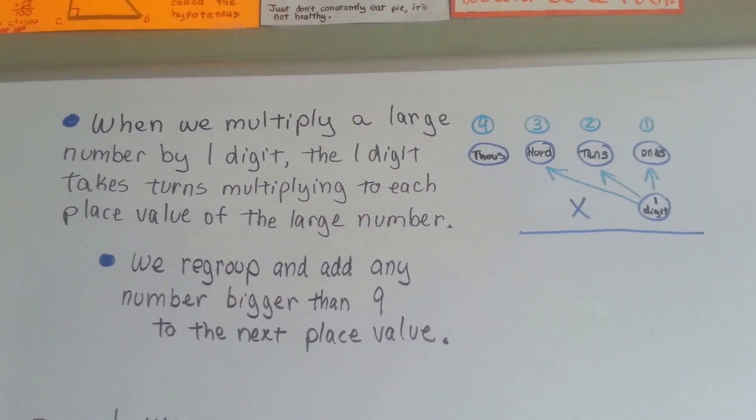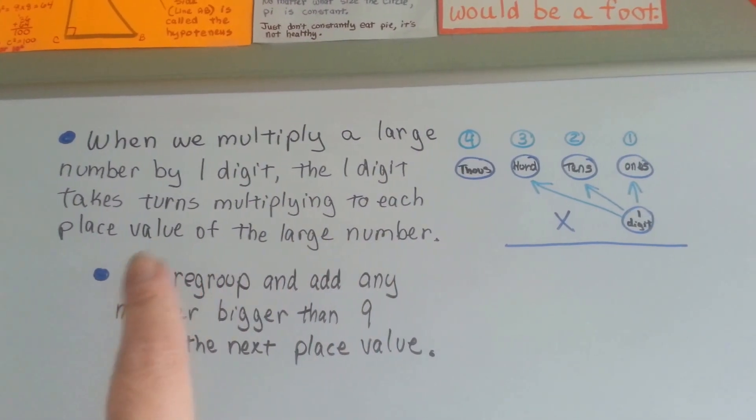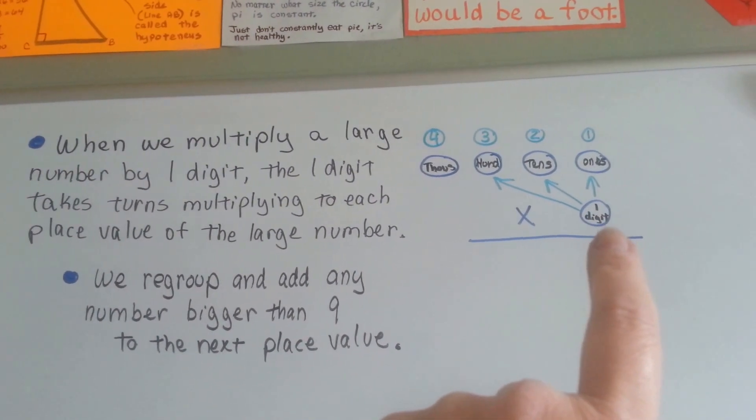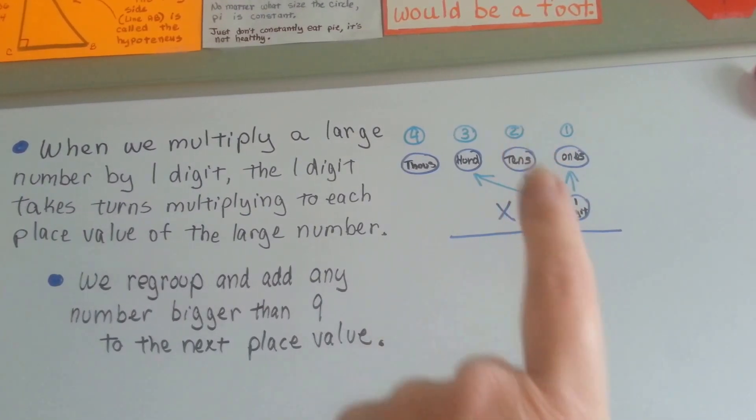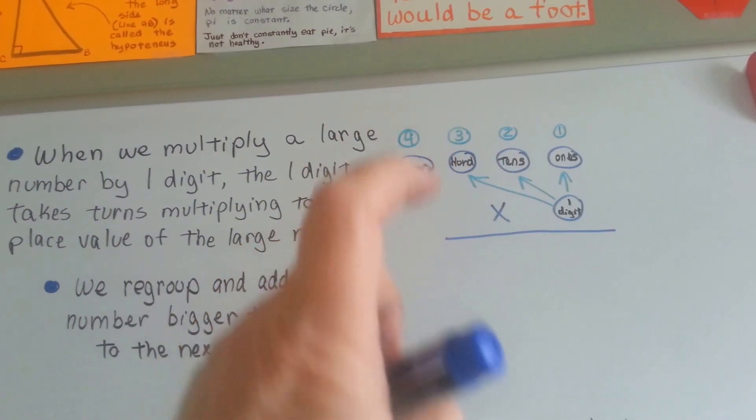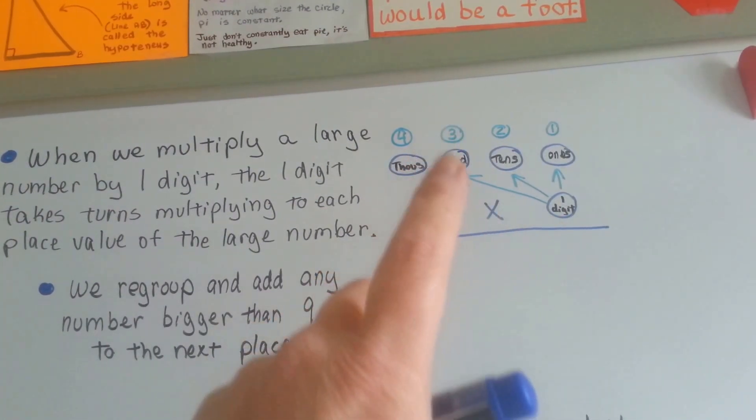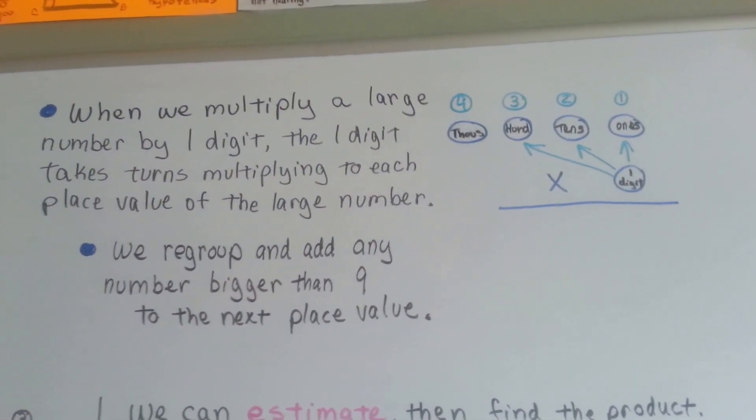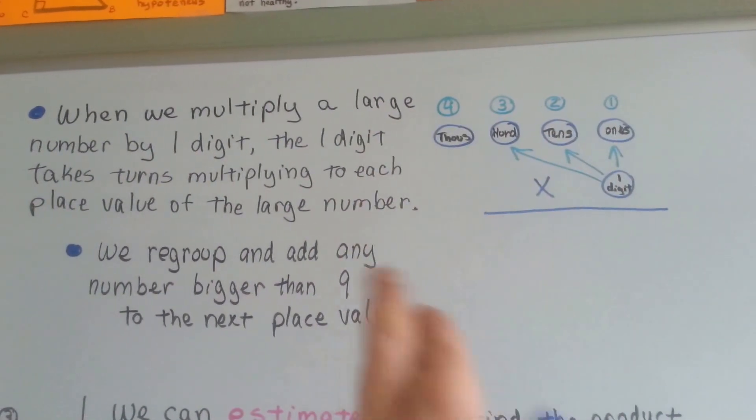When we multiply a large number by a one-digit, the one-digit takes turns multiplying to each place value of the large number. The first thing it would do is multiply to the ones, and then put any carryover regrouping to the next place value. Then it would multiply the tens and put any carryover or regrouping on top of the hundreds, multiply the hundreds and add that that was regrouped, and then multiply the thousands and add anything that's regrouped. We regroup and add any number bigger than 9 to the next place value and carry it over.